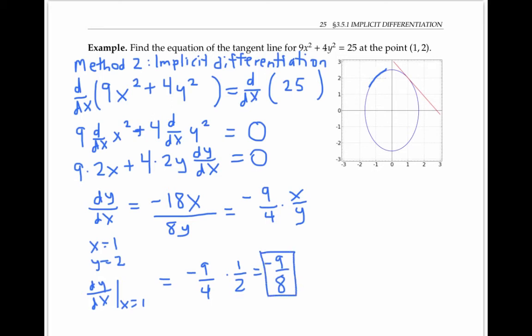So as before, we can compute the equation for the tangent line, and we'll again get y = -9/8 x + 25/8. In this example, implicit differentiation was a convenient way to find the derivative. But it was possible to solve for y and use standard methods instead. But in many examples, like the next one, it's not possible to solve for y directly, and so implicit differentiation is the only way to go.